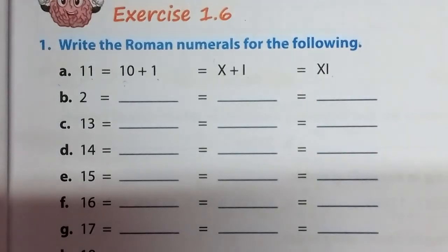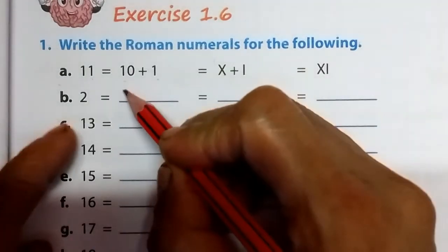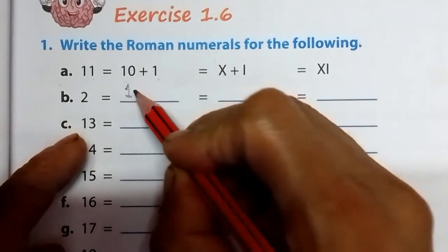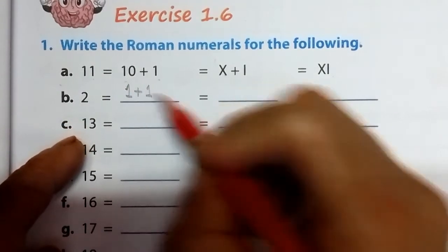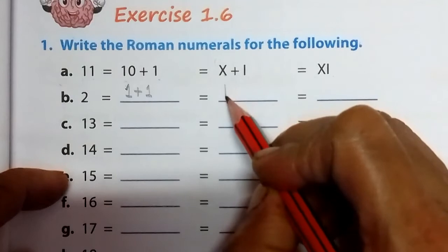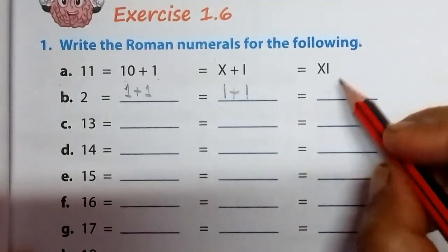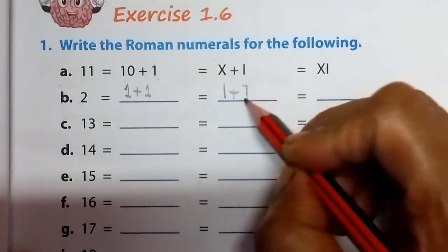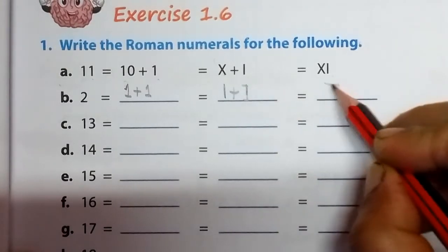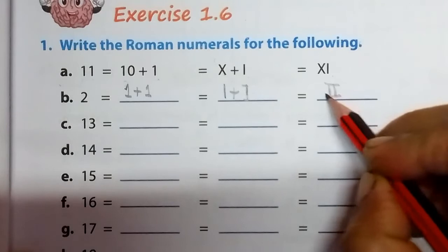Then next is 2. 2 means 1 plus 1. So 1 is written like one stick, and plus again 1 is written like one stick. Then 2 is written like this: II.